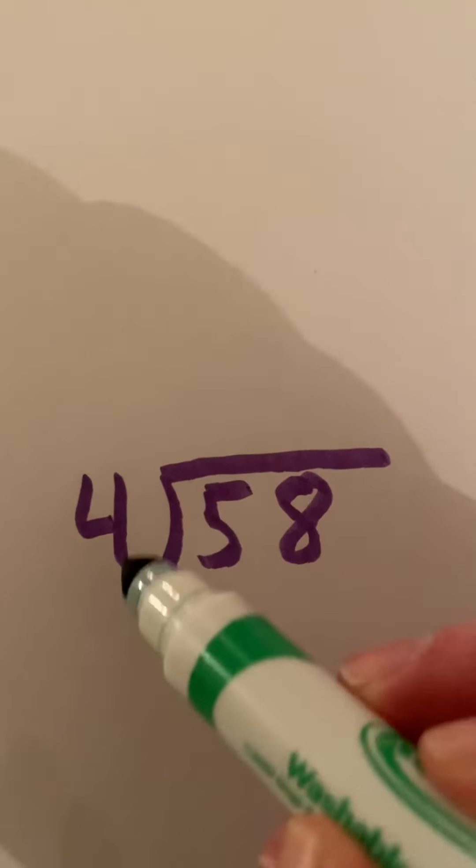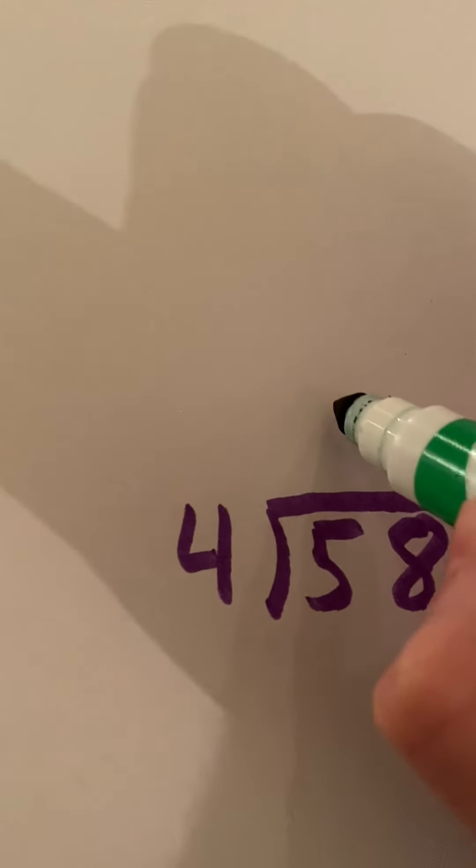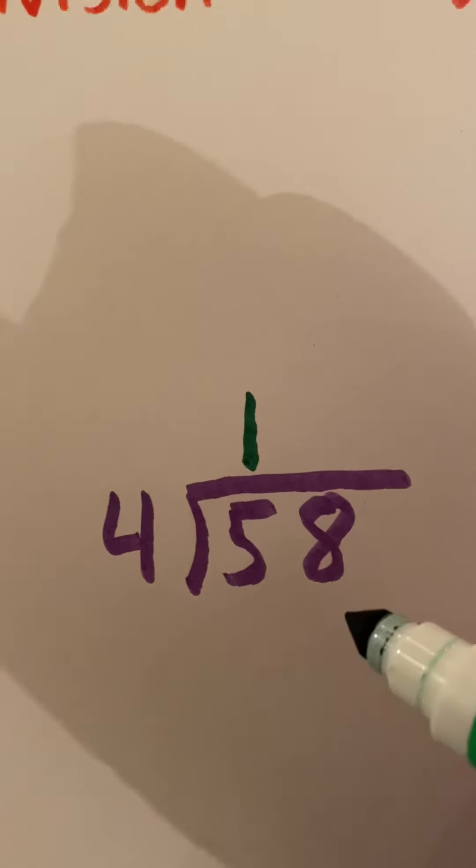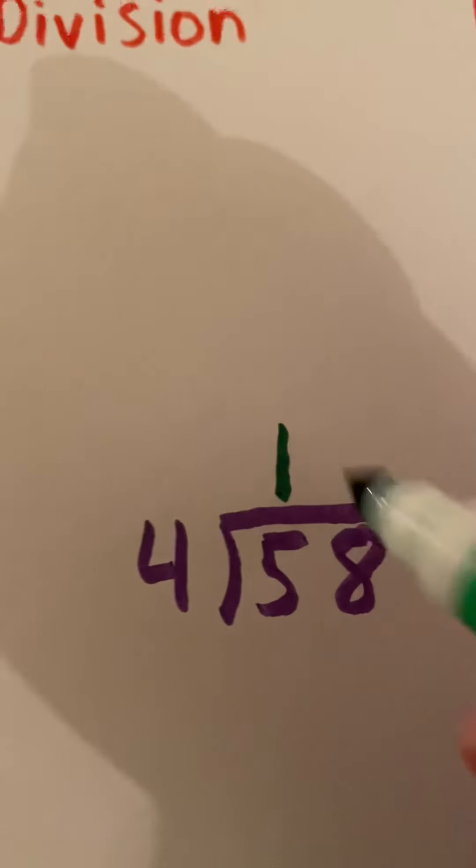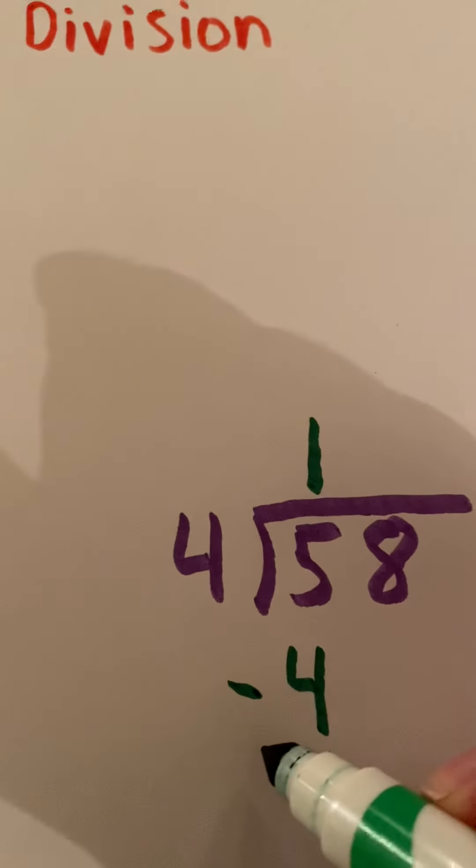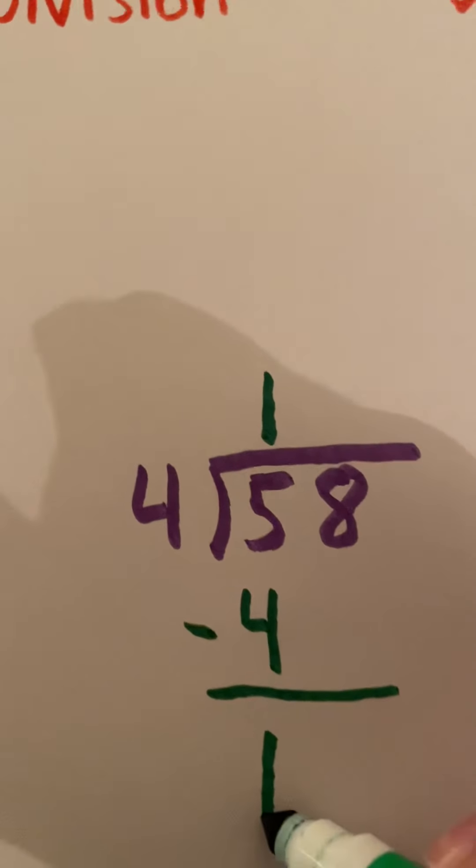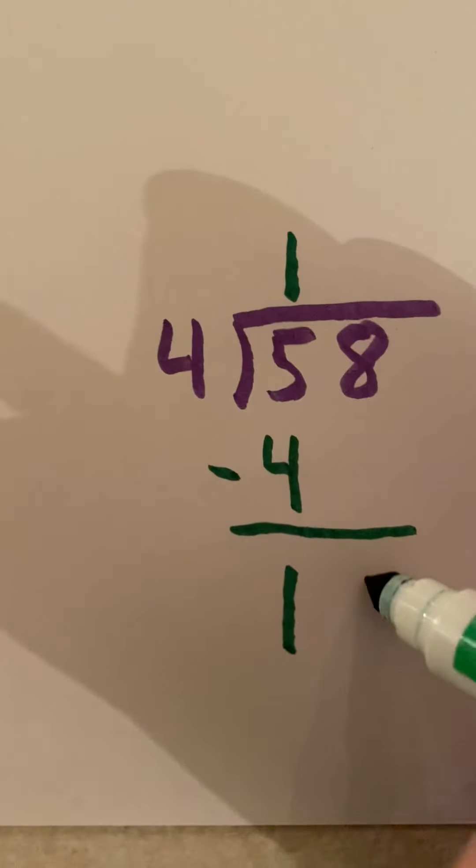So again, I have to think, how many times can I fit 4 into 5? That goes in one time. So I multiply. 4 times 1 is 4. Now I can subtract. 5 minus 4 is 1. Bring down my 8.